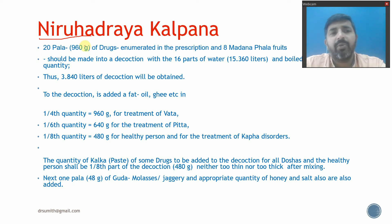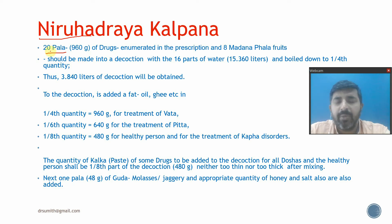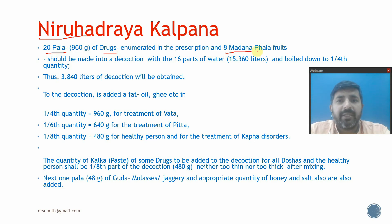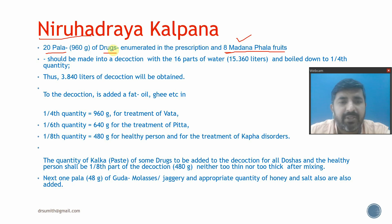The preparation of decoction enema, or Niruha Bhasti — remember that Niruha Bhasti and Asthabana Bhasti are the same thing; both indicate Kashaya Bhasti. Kashaya is an aqueous extract of a drug. We will be taking 20 Pala — an old measurement unit equivalent to approximately 960 grams — of the drugs used to make the Kashaya, along with 8 Madanaphala fruits. Madanaphala is used for providing Vamana and also in Basti.